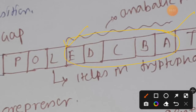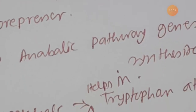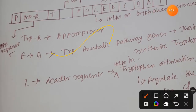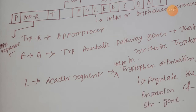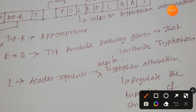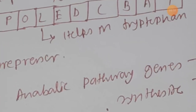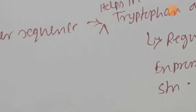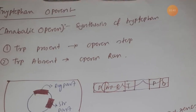From E to A, all the structural genes are tryptophan anabolic pathway genes — meaning they are going to synthesize tryptophan. So as you can see, there are a total of five genes involved in the anabolic pathway, which is the tryptophan synthesis pathway. The leader gene L will be involved in their regulation via tryptophan attenuation, which we will discuss in upcoming videos.